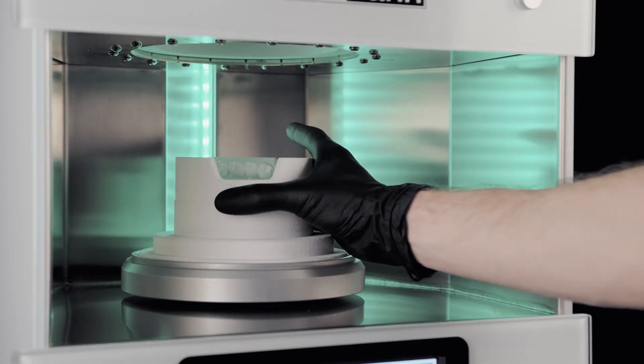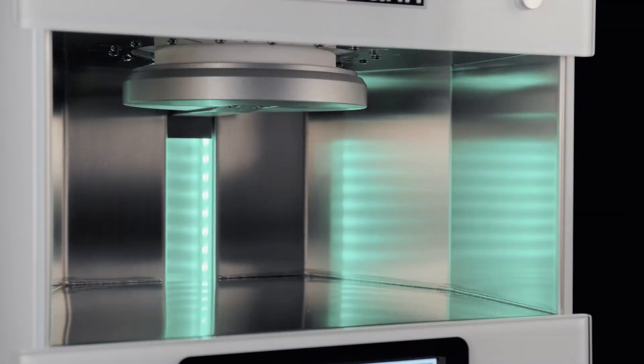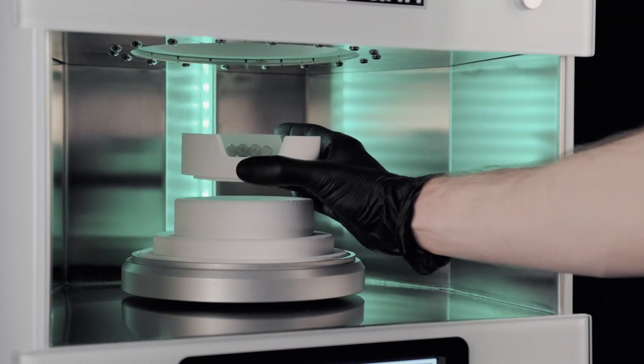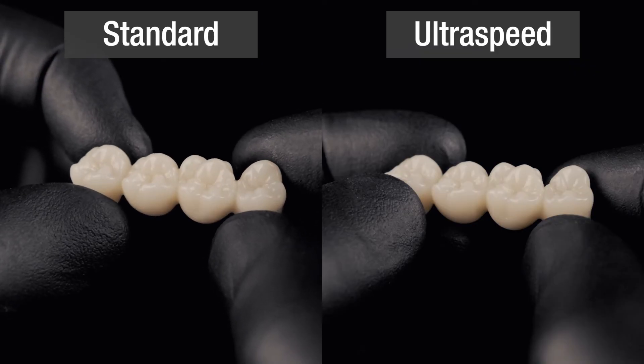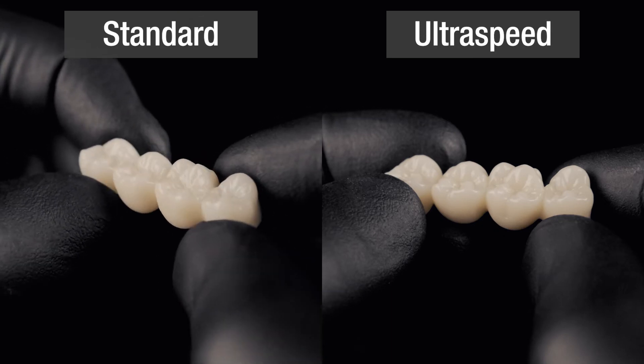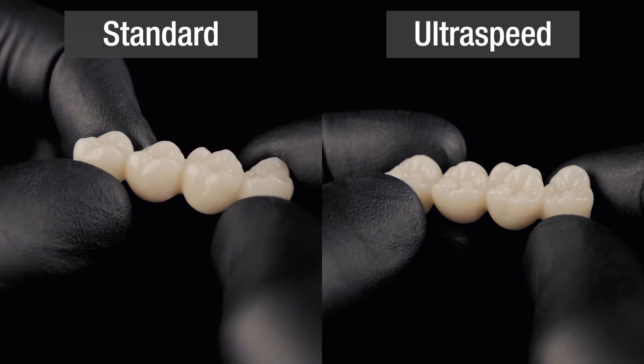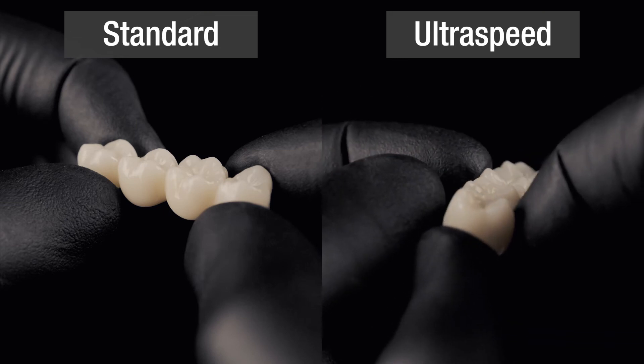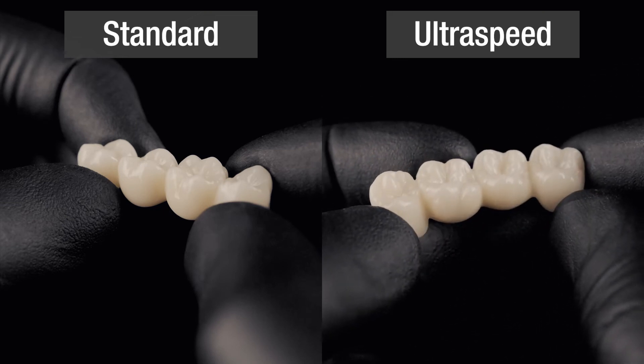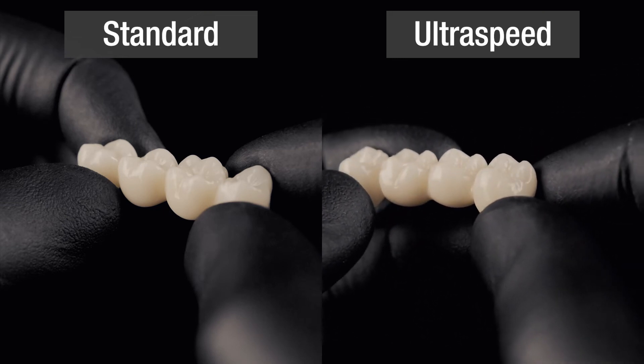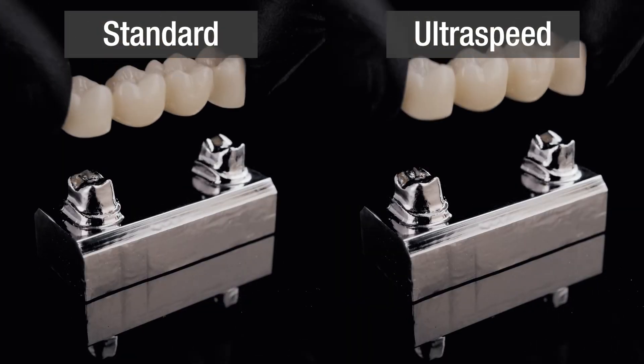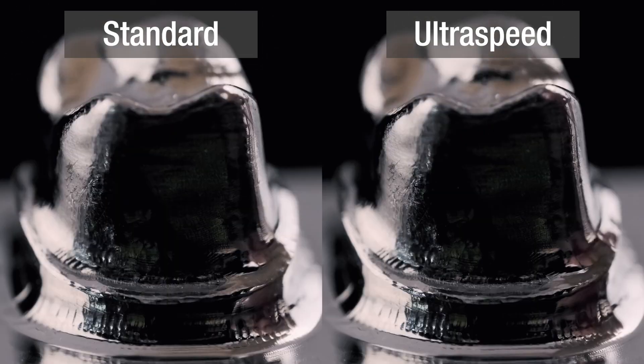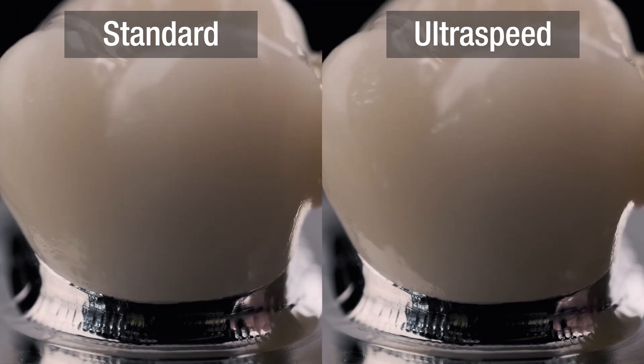Let's take a closer look at the precision of the ultra-speed programs. On the left, we sintered a 4-unit bridge with the standard program in about 8 hours. On the right, we sintered the same structure in just 1.5 hours with the ultra-speed program, saving time and energy. As you can see, both bridges show an extremely accurate fit adjustment after sintering.